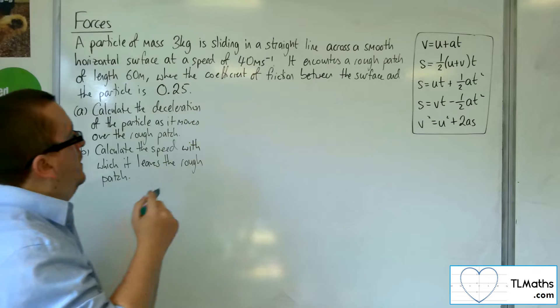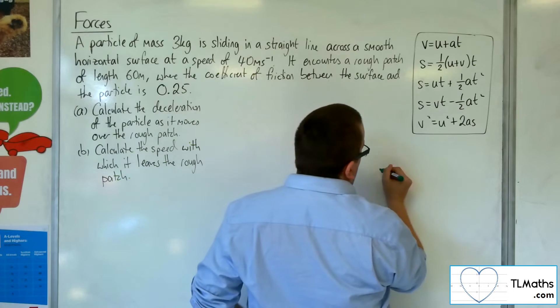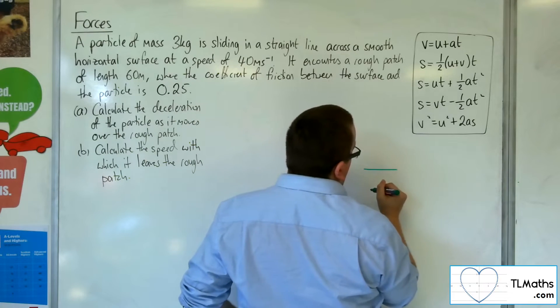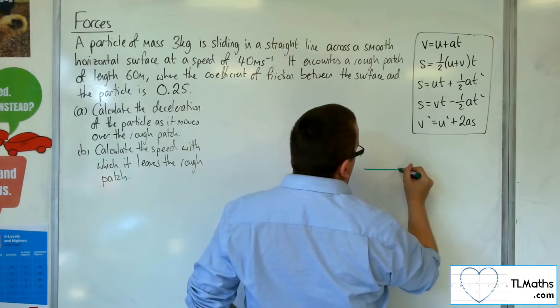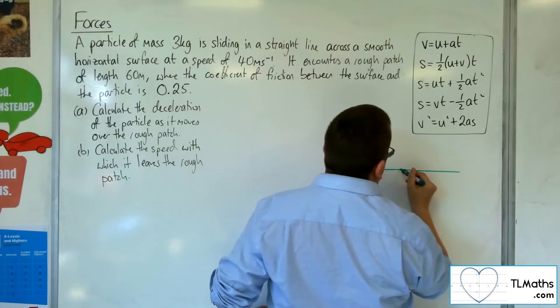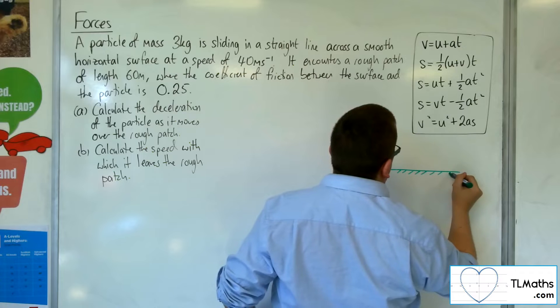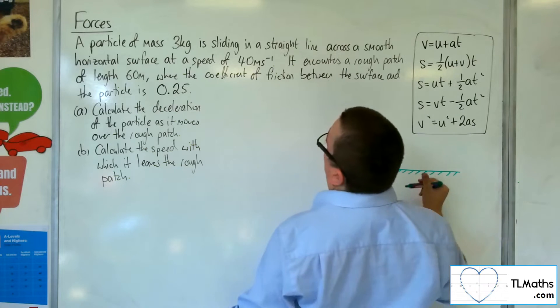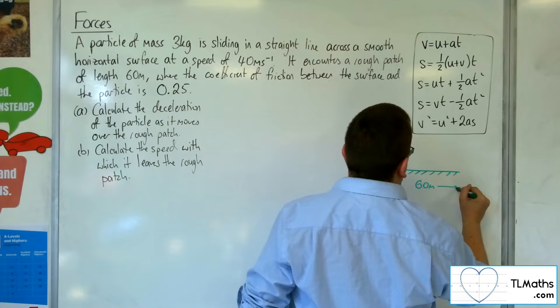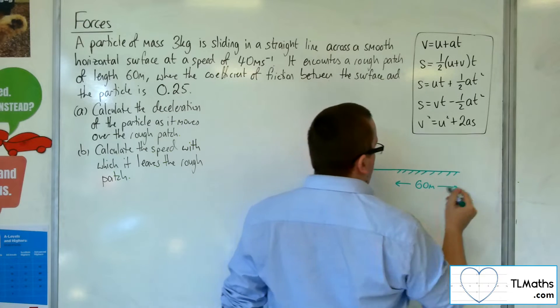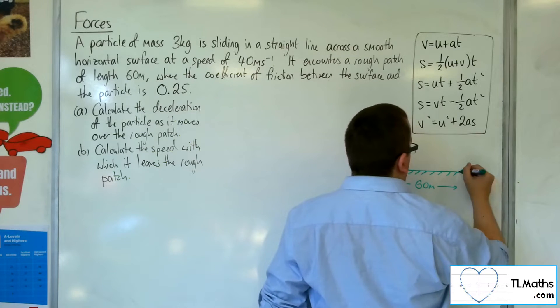Visually what's happening is that we have this smooth area, a floor, then there's going to be this rough patch, which we know is 60 metres long, and then it's smooth again.